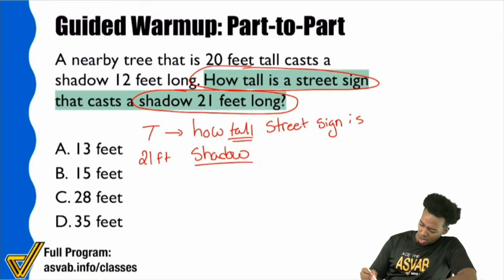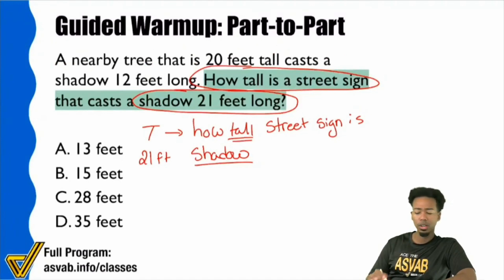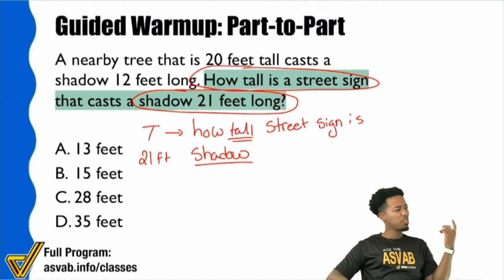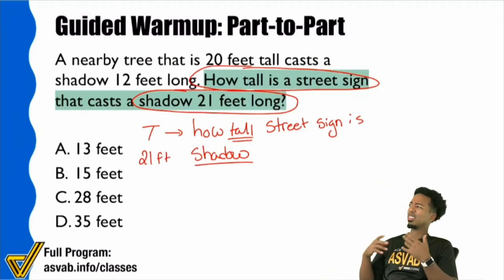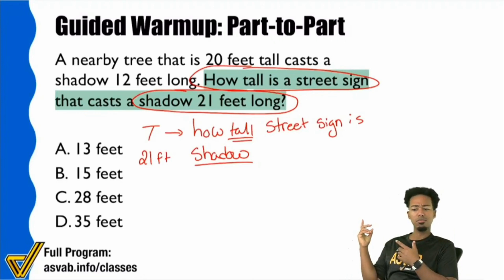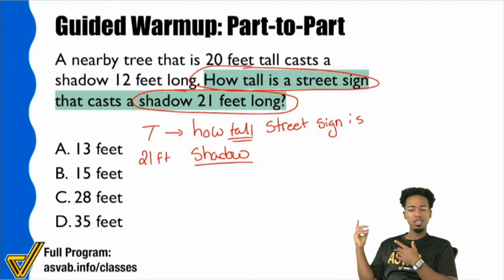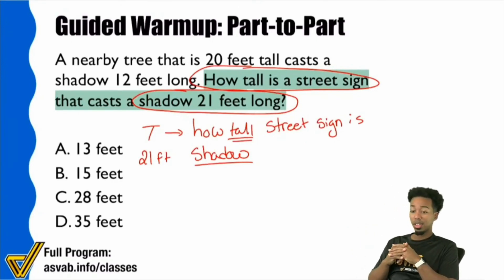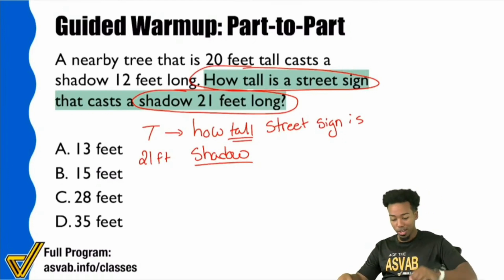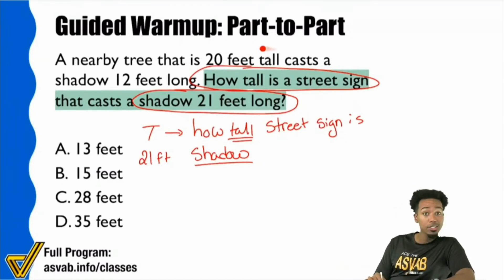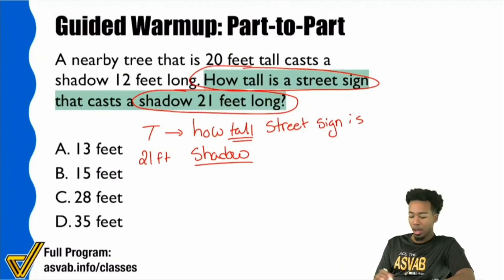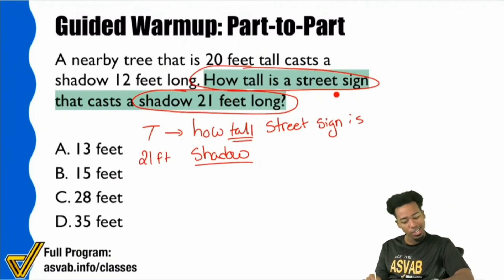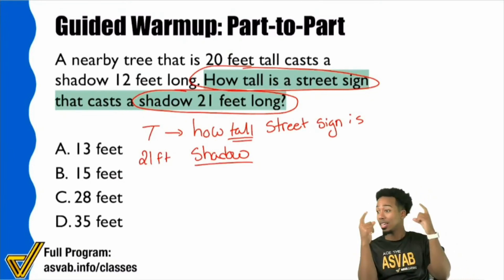Let's get back to the problem. A nearby tree that is 20 feet tall casts a shadow 12 feet long. Remember that whole thing about proportions — comparing the same things in the same way? Do you see the same things being compared here? Notice how we're talking about how tall an object is — how tall this tree is and how long the tree's shadow is. And then the question says, how tall is a street sign that has a shadow 21 feet? Height versus shadow — in two sentences, it happens twice.